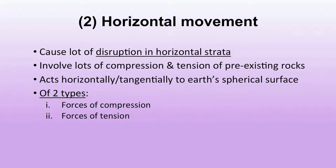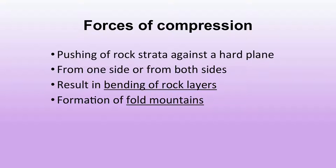Horizontal movement causes lots of disruption in horizontal strata, involving compression and tension of pre-existing rocks. It acts horizontally or tangentially to earth's spherical surface. There are two types: forces of compression and forces of tension. Forces of compression involve pushing of rock strata against a hard plane — the rock strata is compressed, crumpled from one side or both sides, resulting in bending of rock layers. Fold mountains are an example.